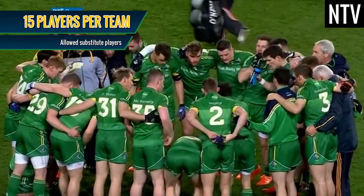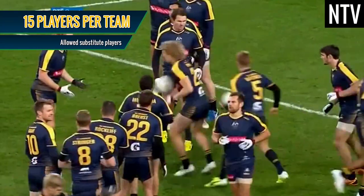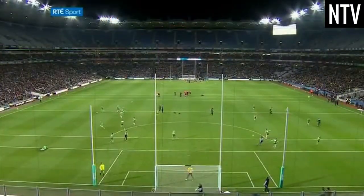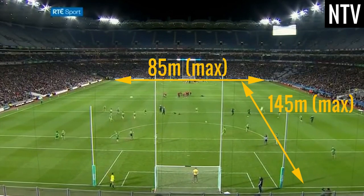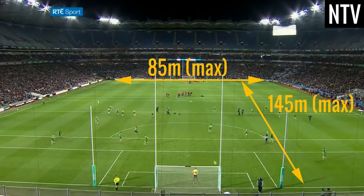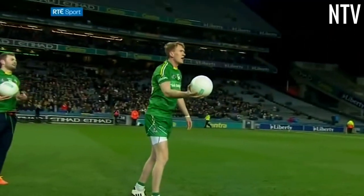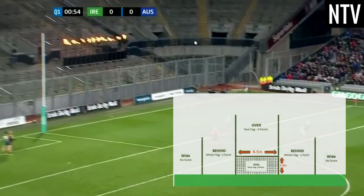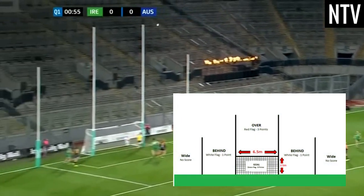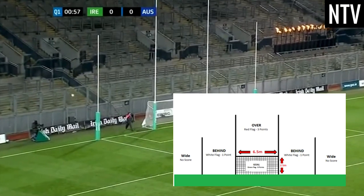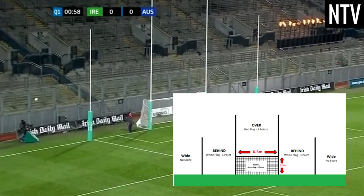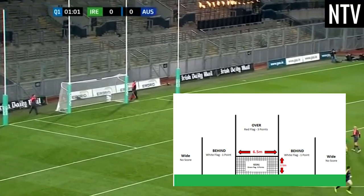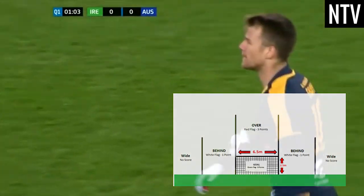International Rules Football is played with two teams of 15 players each, on a rectangular field that's generally a maximum of 145m x 85m. The ball is a round ball, just like in Gaelic Football. The goals are 6.5m wide and the crossbar is 2.5m above the ground, just like in Gaelic Football, with the addition of wide posts, just like in Aussie Rules Football.